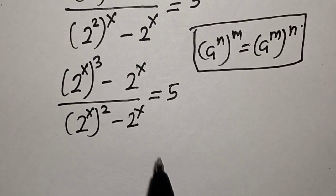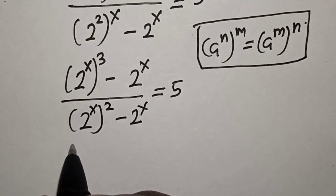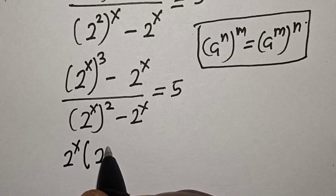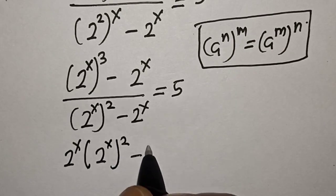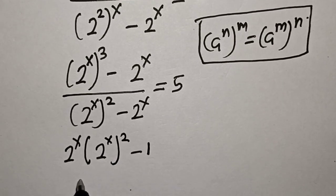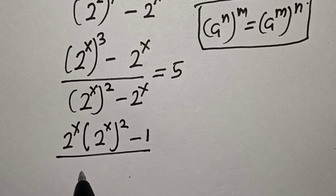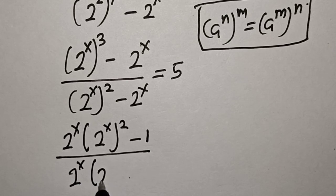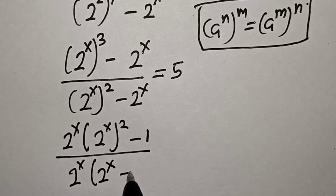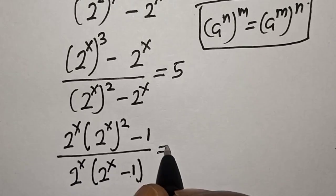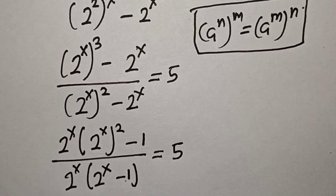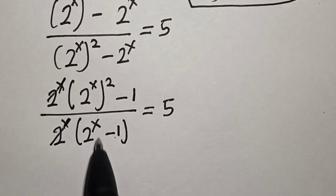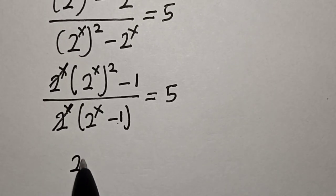Now 2 raised to power x is common — let's bring it out. We get 2 raised to power x into 2 raised to power x minus 1, divided by 2 raised to power x into 2 raised to power x minus 1, is equal to 5. The 2 raised to power x cancels, and we are left with 2 raised to power x.